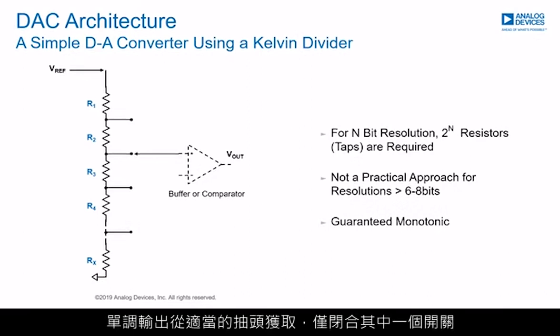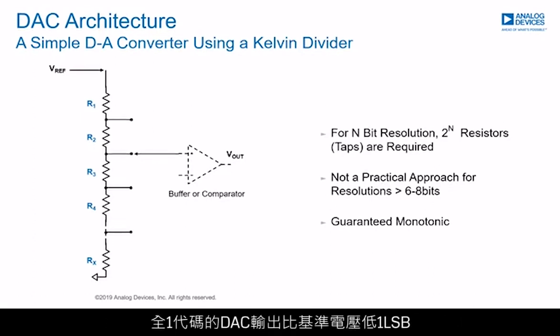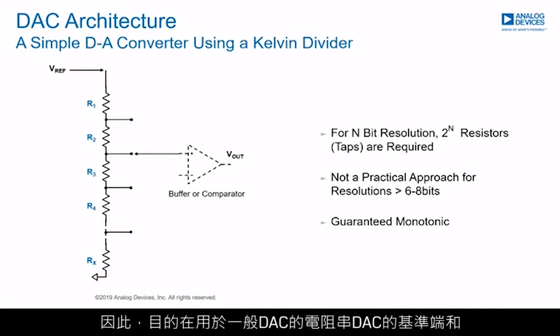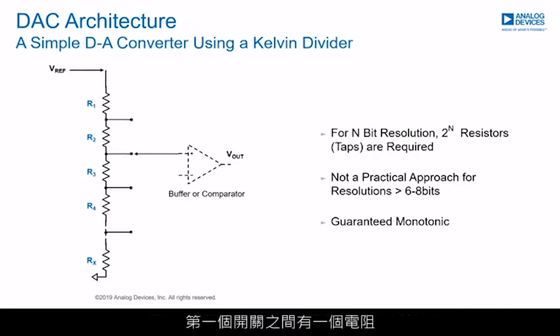The monotonic output is taken from the appropriate tap by closing just one of the switches. The output of a DAC for an all-ones code is 1 LSB below the reference. So a string DAC intended for use as a general-purpose DAC has a resistor between the reference terminal and the first switch. This is also the architecture used in digital potentiometers.